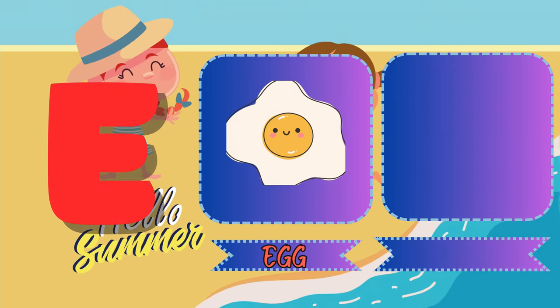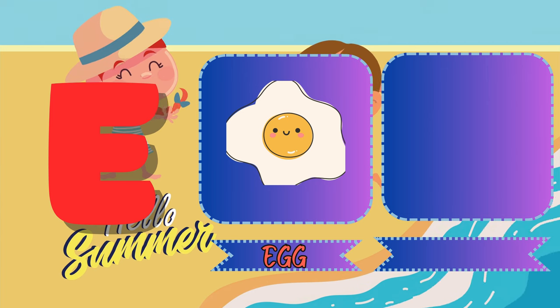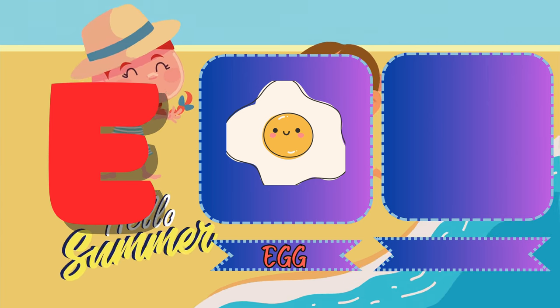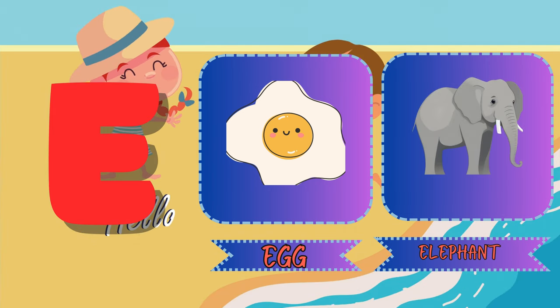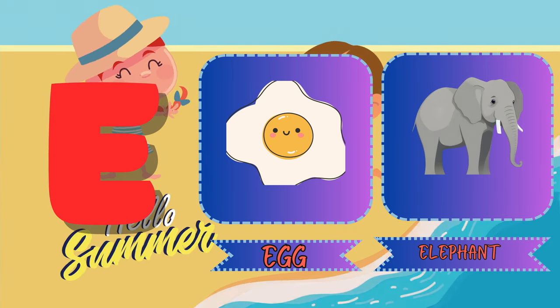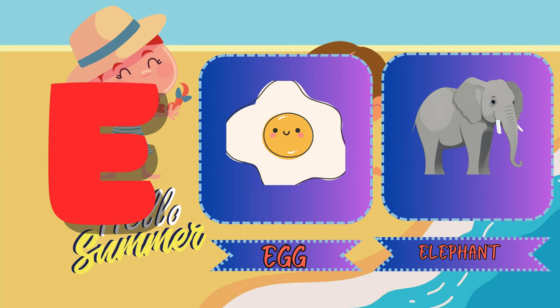E. E for egg. This is an egg. E. E for elephant. This is an elephant.